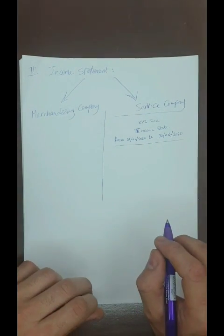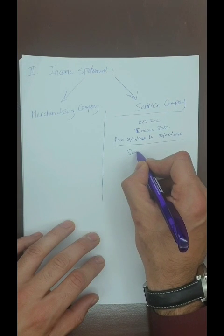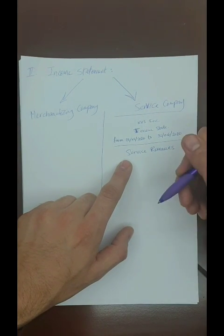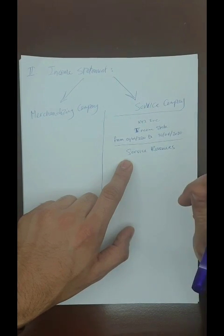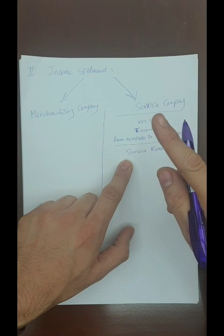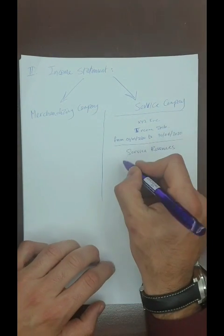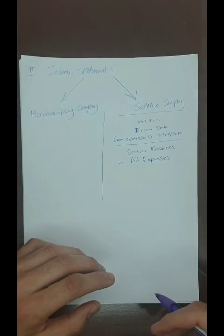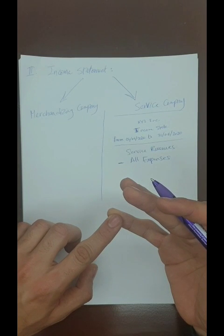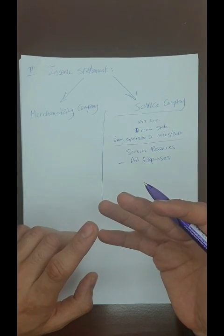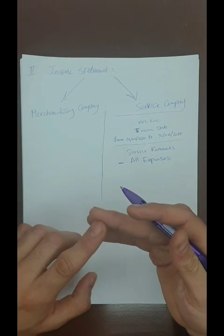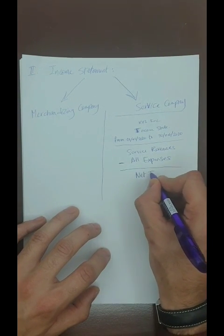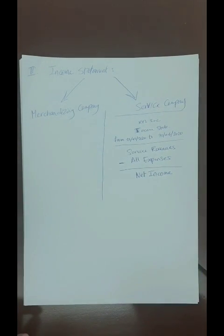For a service company, the income statement starts with service revenue — the income earned by the company for providing services, such as when a guest pays a hotel for a night's stay. Then you deduct all expenses: salaries, electricity or utility expenses, rent expenses, and so on. When you deduct all expenses from service revenues, you get net income — the profit or loss generated by the company.